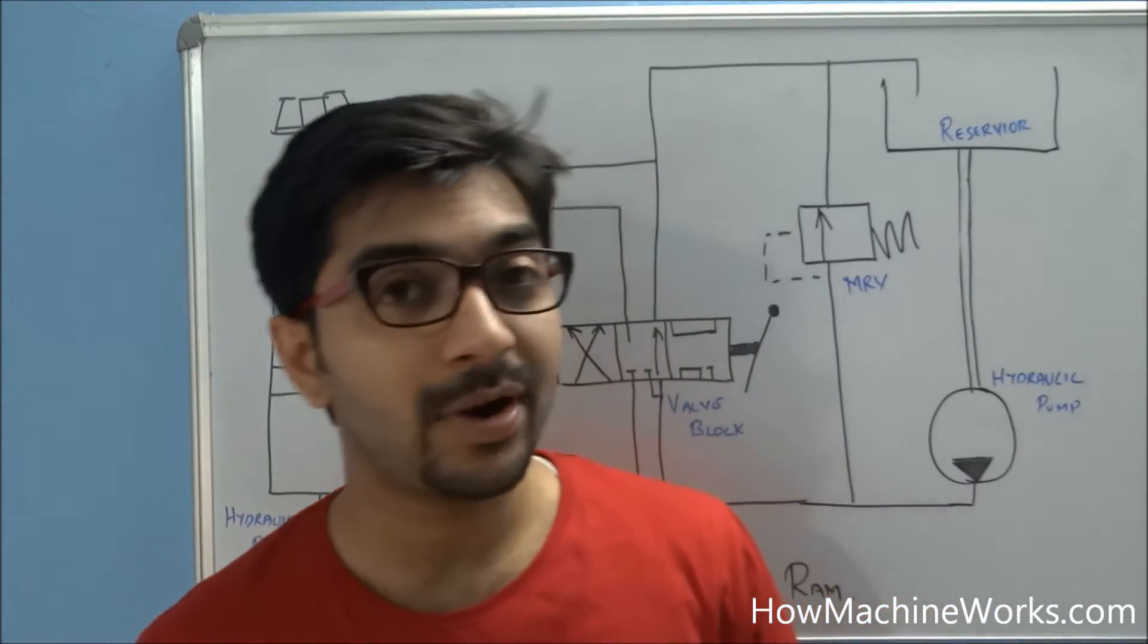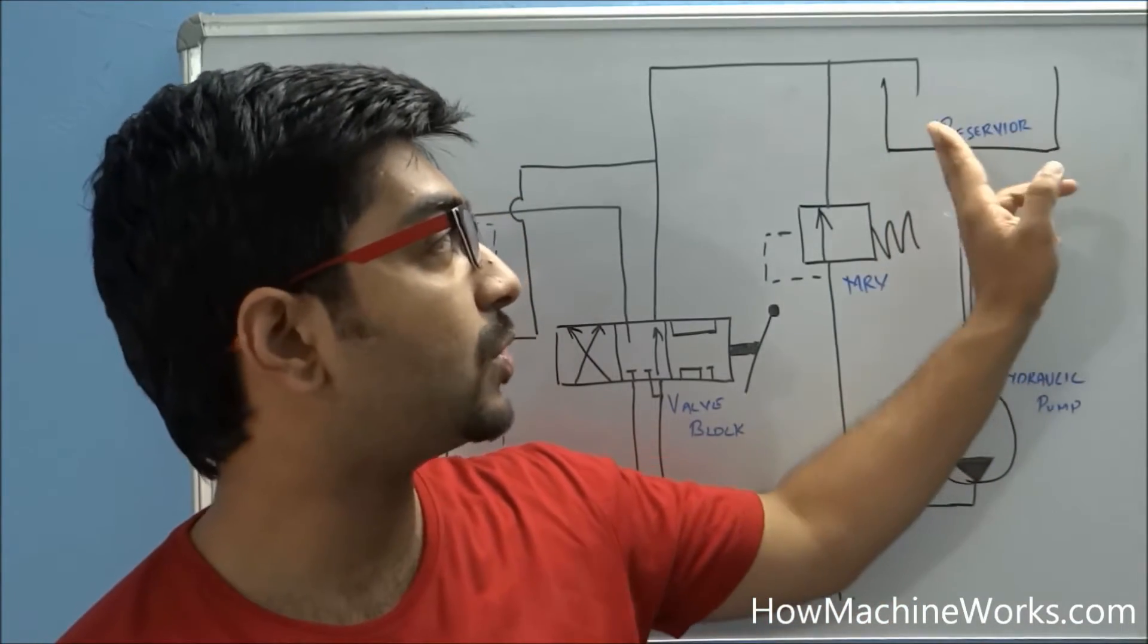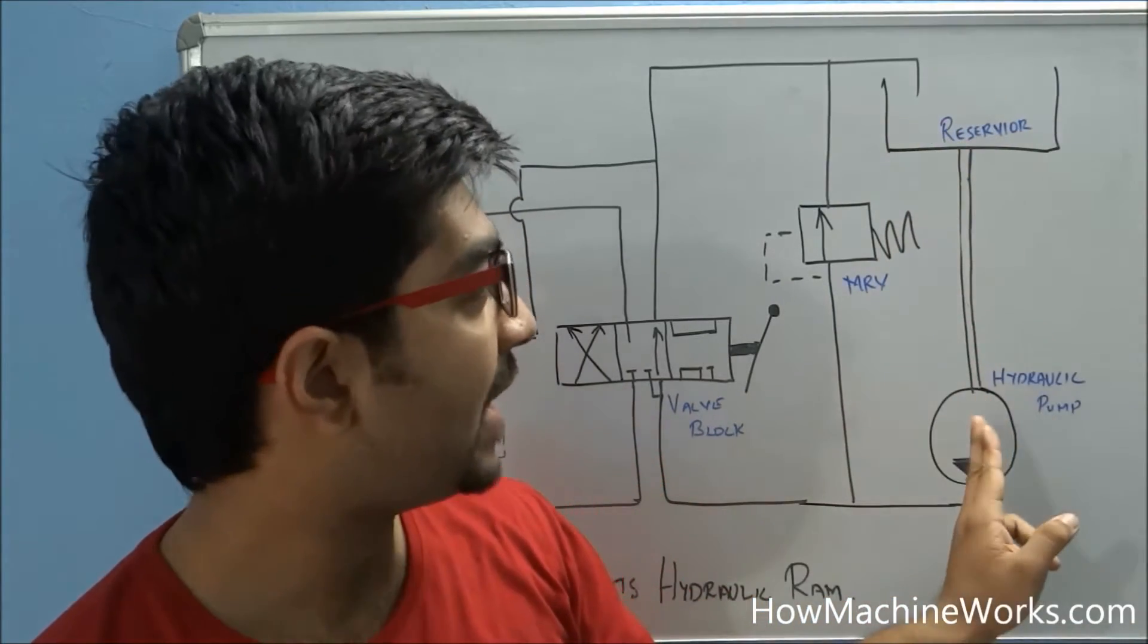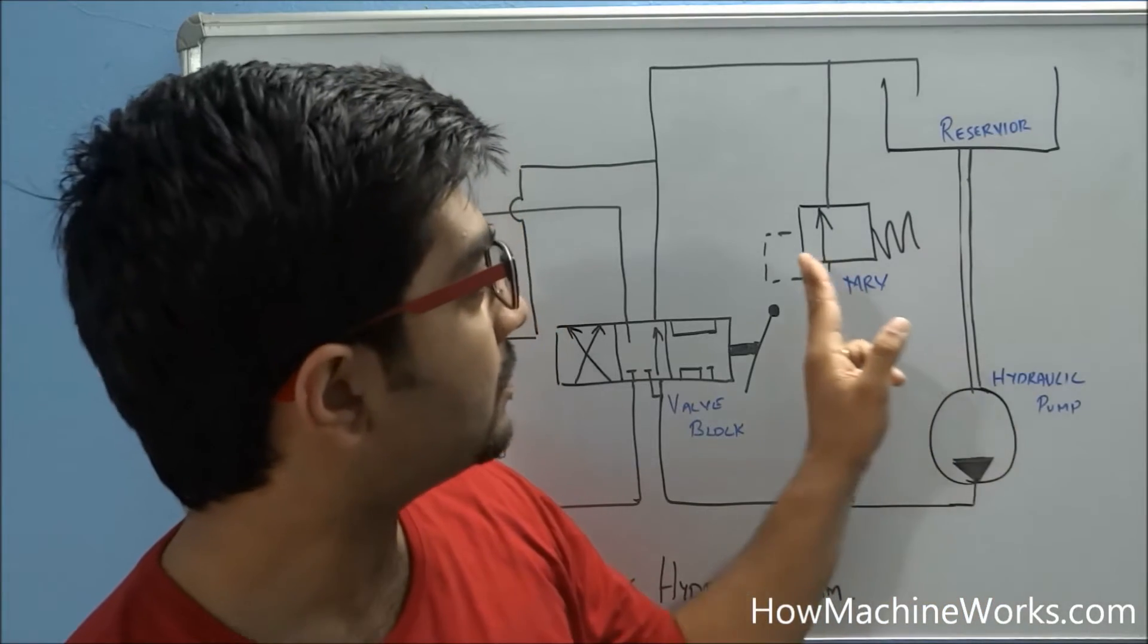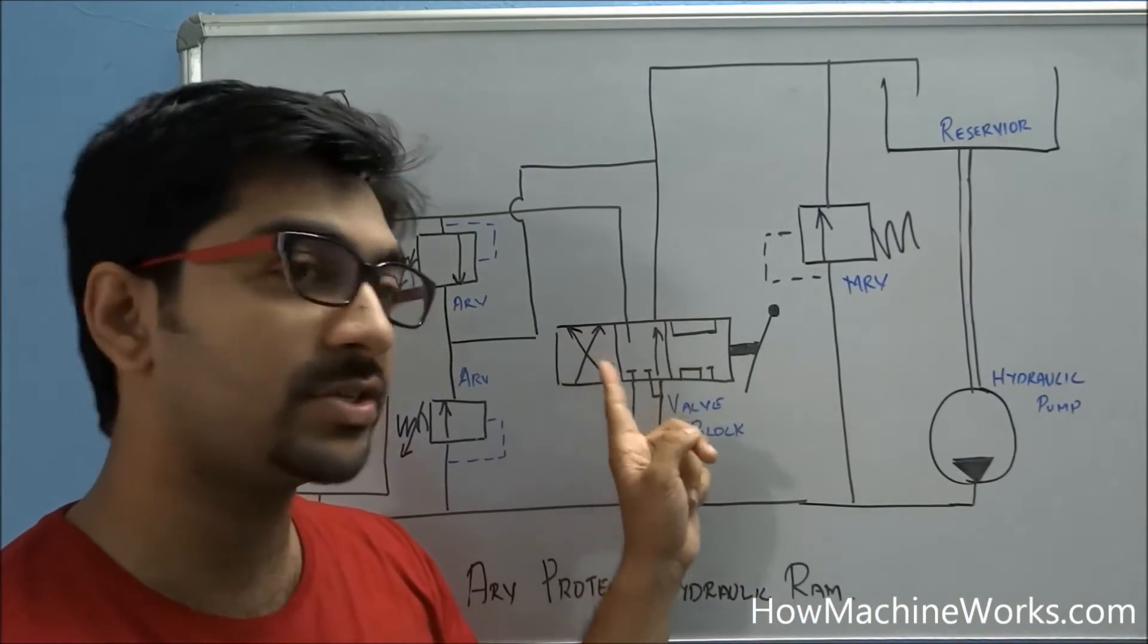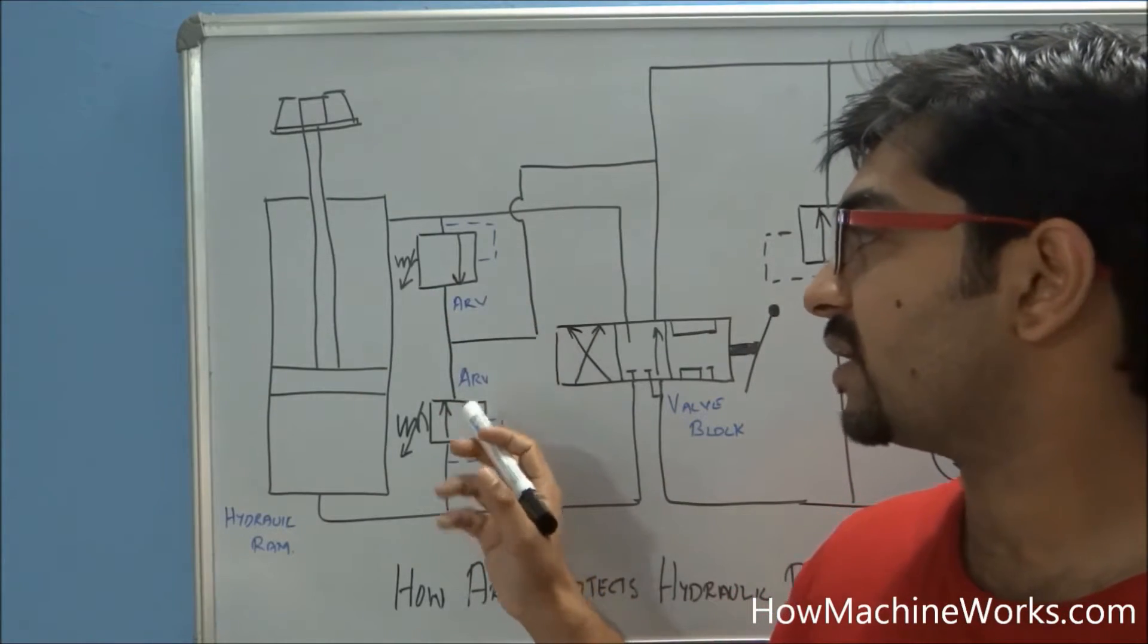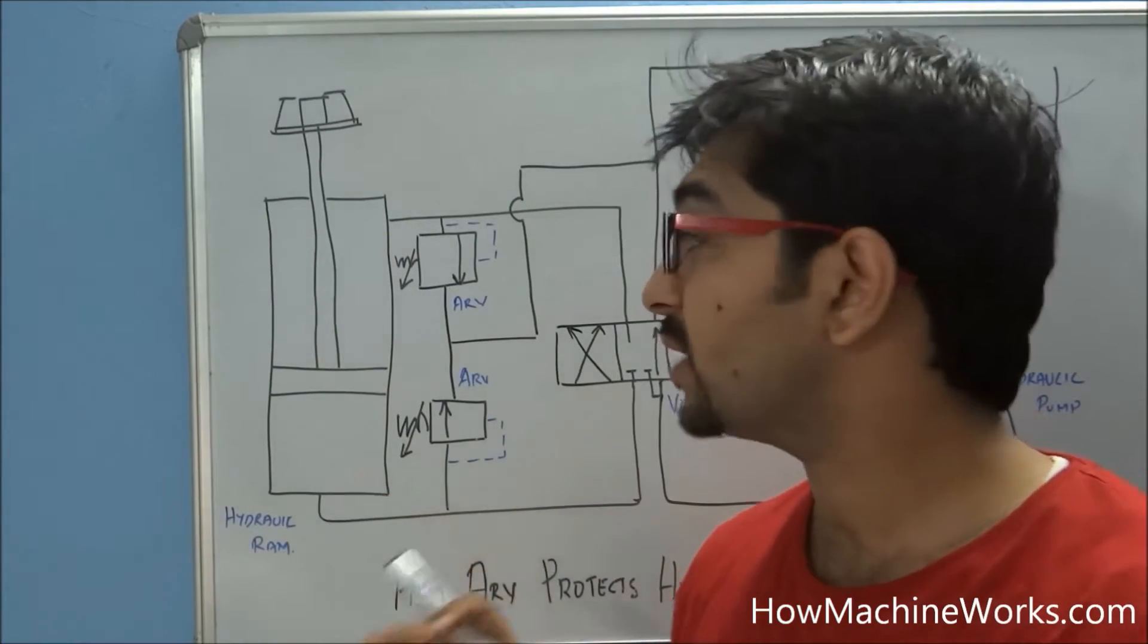Now let's identify all the components of the basic hydraulic circuit. This is a reservoir where we store the hydraulic fluid. Here we have the hydraulic pump, this is the main relief valve, then we have the valve block or the direction control valve. Here we have the two auxiliary relief valves and this is our hydraulic cylinder.